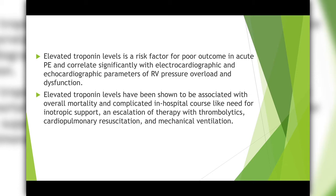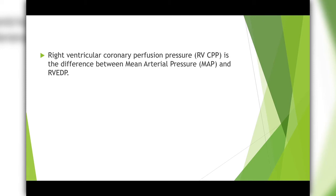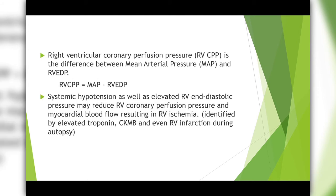Elevated troponin is also associated with increased overall mortality and a complicated in-hospital course, including requiring inotropic support, escalation of therapy with thrombolytics, CPR, and mechanical ventilation. Right ventricular coronary perfusion pressure is the difference between mean arterial pressure and RV end-diastolic pressure. Systemic hypotension as well as elevated RV end-diastolic pressure may reduce RV coronary perfusion pressure.